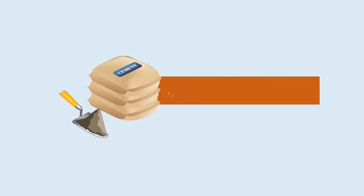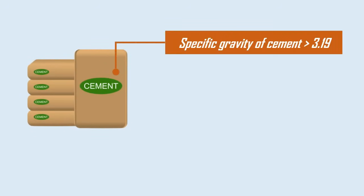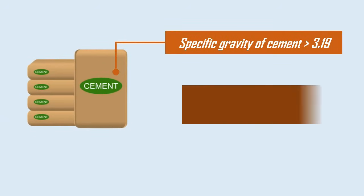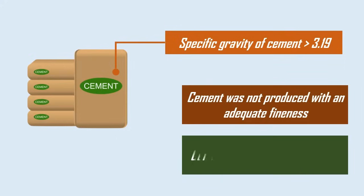In general, the specific gravity of cement lies between 3.1 and 3.19. If the specific gravity of cement is greater than 3.19, it indicates that either the cement was not produced with an adequate fineness or that it contains more moisture.